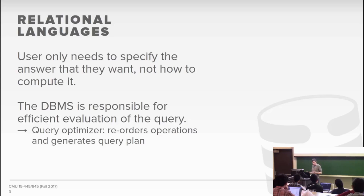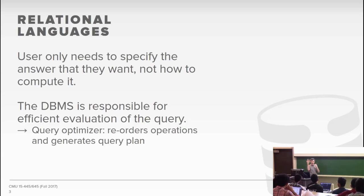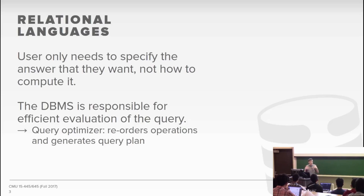The key thing to understand about SQL, and relational languages in general, is that they are declarative as opposed to imperative or procedural. As a declarative language, you only tell the database system what answer you want, not how to compute it. In relational algebra, we defined low-level primitives to read and filter data without specifying how — no for loops, no hash tables. We only told the system what we wanted. In relational calculus, we just said exactly what we wanted, and the database system figures out the best way to execute it.